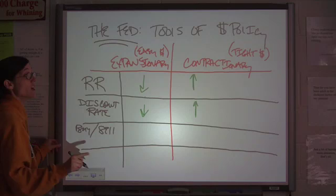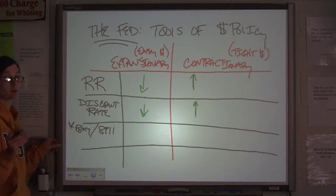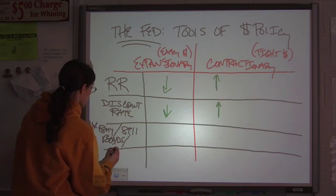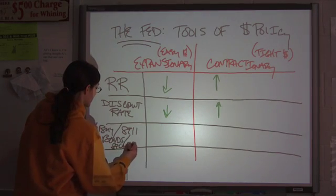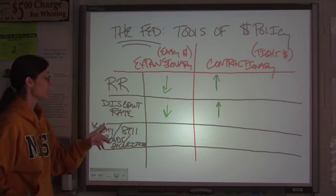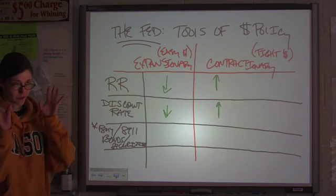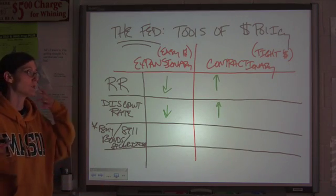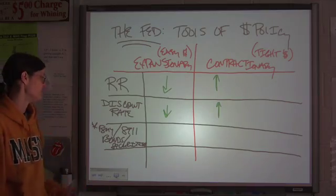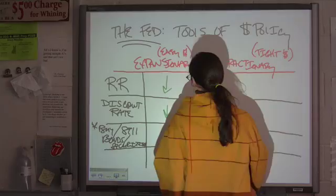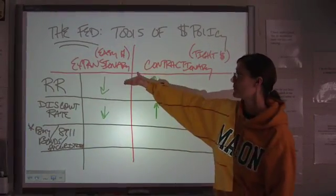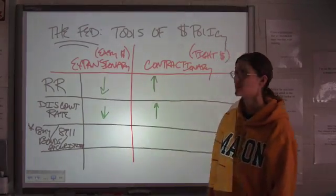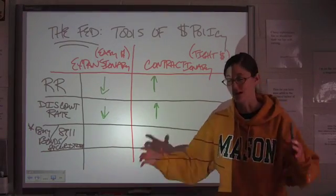Now the third tool — and this is the one you're going to see most often, the one used most, talked about in the news all the time — is buying and selling government bonds and securities. This does not mean commercial stocks; it's a completely different ballgame. We're talking about government bonds, treasury bonds, T-bills — government-issued securities. For the first two tools we had increase or decrease, but buying and selling bonds is different — you either buy or you sell.